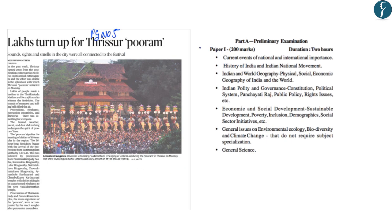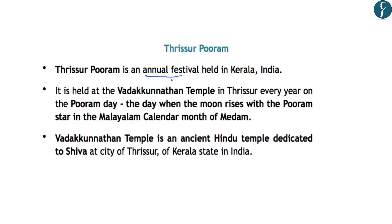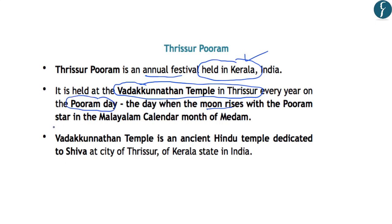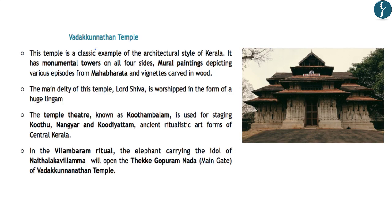The next article on page number five is related to a festival celebrated in the state of Kerala — the Thrissur Pooram. This falls under history of India and art and culture in the preliminary examination syllabus. It is an annual festival held at the Vadakkunathan Temple in Thrissur, celebrated on the Pooram day when the full moon rises with the Pooram star in the Malayali calendar month of Medam. The Vadakkunathan Temple is an ancient Hindu temple dedicated to Lord Shiva.